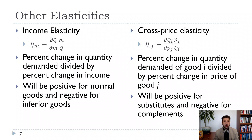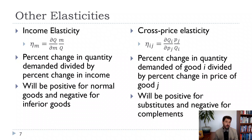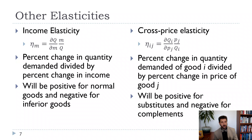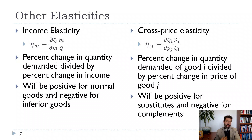Similarly, for our cross price elasticity, this is the percent change in quantity demanded for good i due to a percent change in the price of good j. For some goods it will be zero — they won't be related. But if it's positive, that means they're substitutes: if the price of j goes up, demand for good i goes up. It'll be negative for complements — if the price of gasoline goes up, demand for big SUVs will go down.